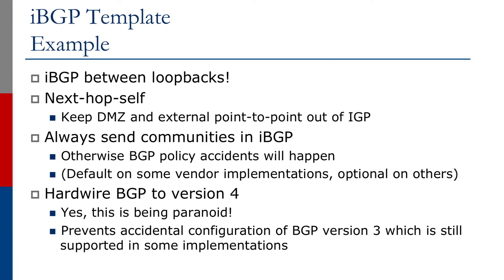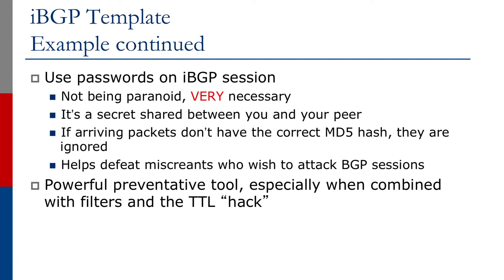We'll now give you an example of an IBGP template. Remember to use IBGP between loopbacks and not real interfaces. We are also encouraged to use NextHopSelf to keep DMZ and external point-to-point links out of IGP. Always send communities in IBGP; otherwise BGP policy accidents will happen. This is default on some vendor implementations, whereas it is optional on others. Hardwire BGP to version 4 to prevent accidental configurations of version 3 BGP, still supported in some implementations. You should also secure your IBGP session using passwords — this is not being paranoid, but is very necessary as it helps defeat miscreants who wish to attack BGP sessions. A password is a secret shared between you and your peer, so if arriving packets don't have the correct MD5 hash, they are ignored. This is a powerful preventive tool, especially when combined with filters and TTL hack.